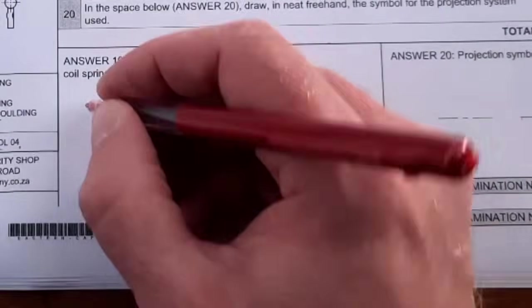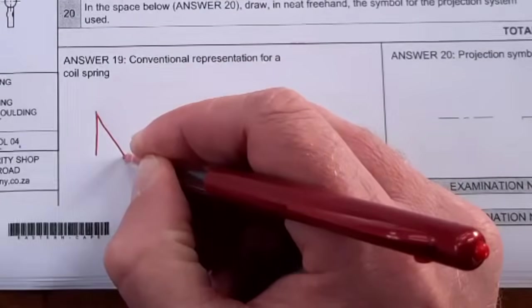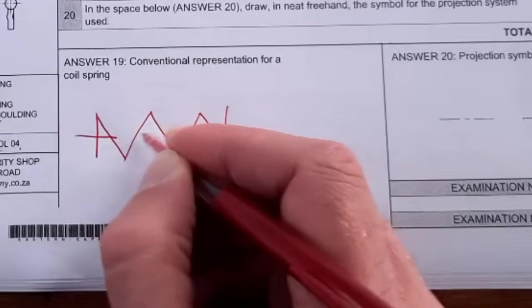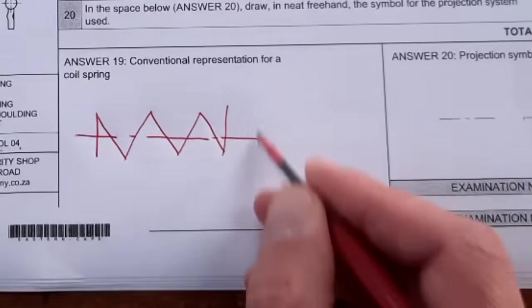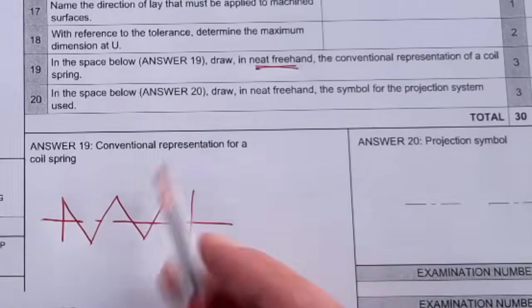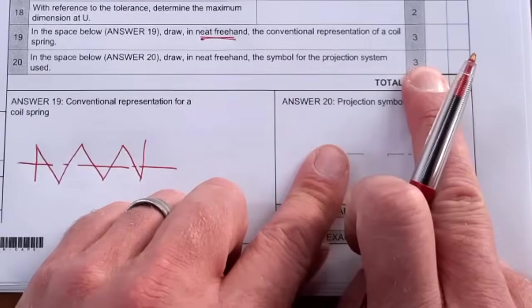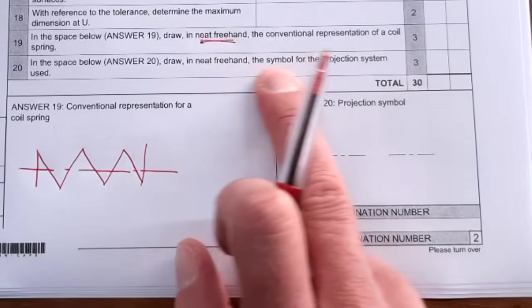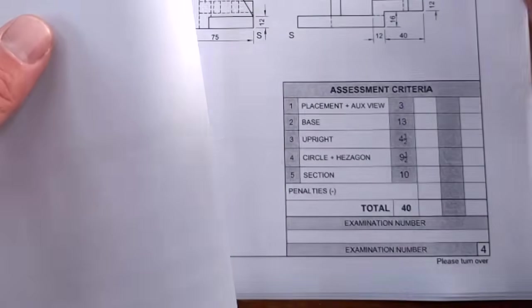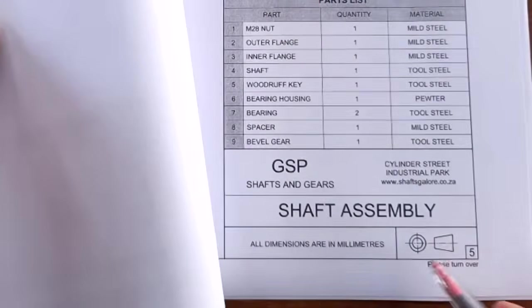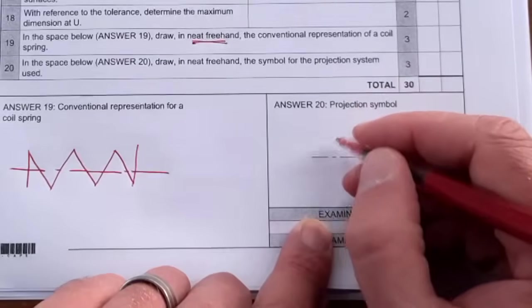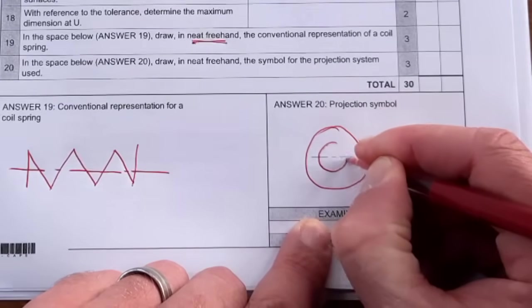Then in the space below, draw in neat freehand the conventional representation of a coil spring. So I'll just draw that for you quickly. It's your straight line and then you've got your coil springs here going, and you're going to end it with a center line going all the way through it. And that's where you're going to get your full marks. It must be freehand - it actually asks for freehand. And then the last one, this is three marks that they give you, I don't know why they keep doing it. Draw a neat freehand the symbol for the projection system used. Now to get this, you just turn to your last page and you'll actually find that symbol as a gift right at the bottom. You're just going to write here. Make sure you do it as neat as possible.